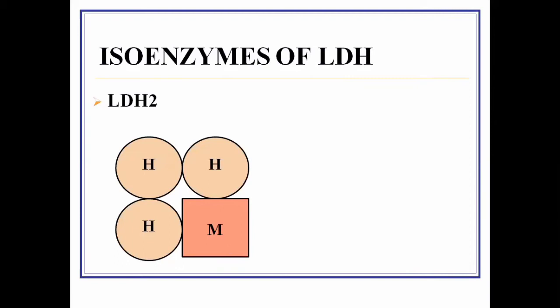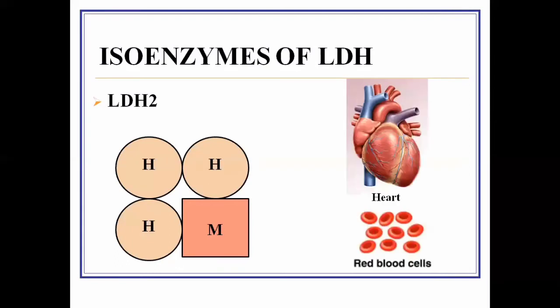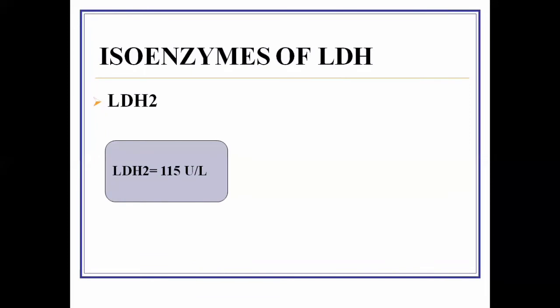LDH2 is most specifically present inside heart cells and RBCs. A minute quantity is also present inside the blood. The normal value of LDH2 in blood is 150 units per liter. If it exceeds this value, it indicates damage to these cells and tissues.